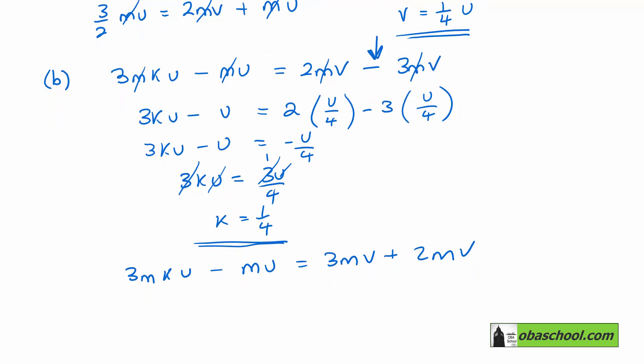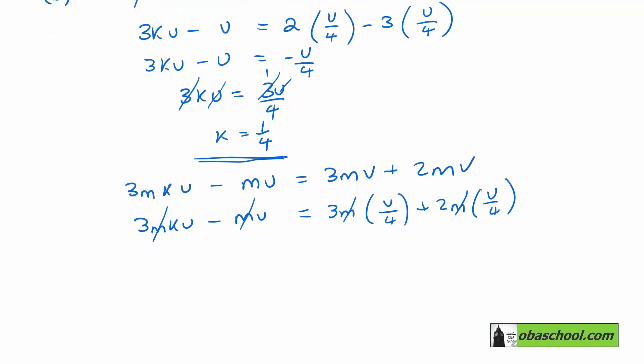So we have 3mKU minus mU equals 3mU/4 plus 2mU/4. We can get rid of the m's throughout as we did last time, and we can also get rid of the U's throughout now, so this has just become 1.